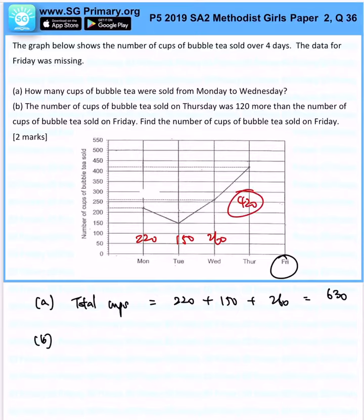So number of cups on Friday, that will be 420 minus 120, that will give me 300. That's the answer for this question.